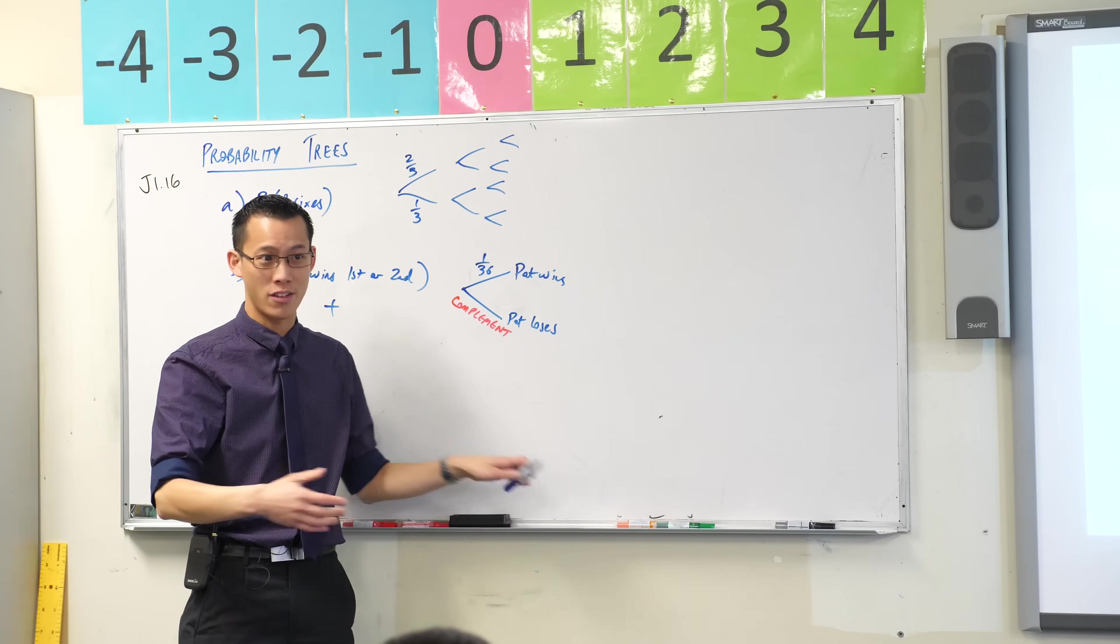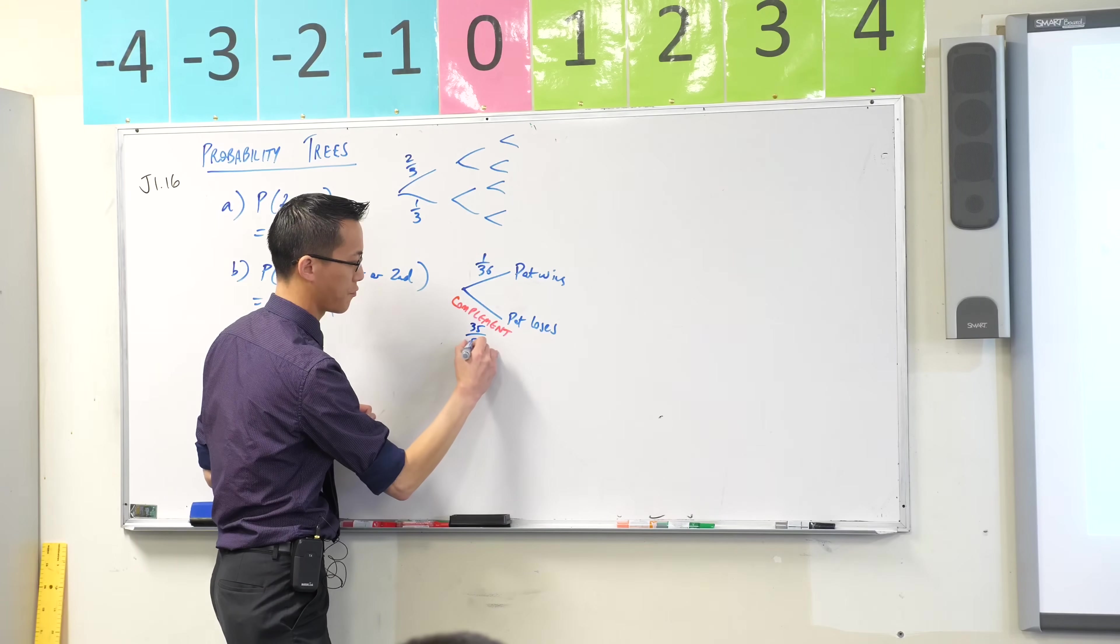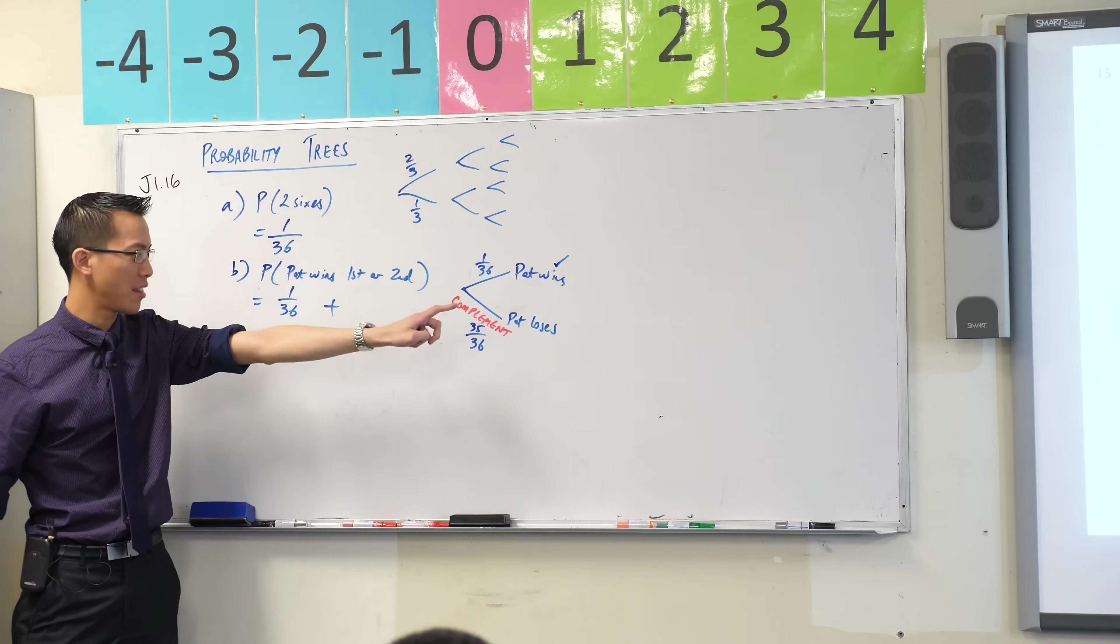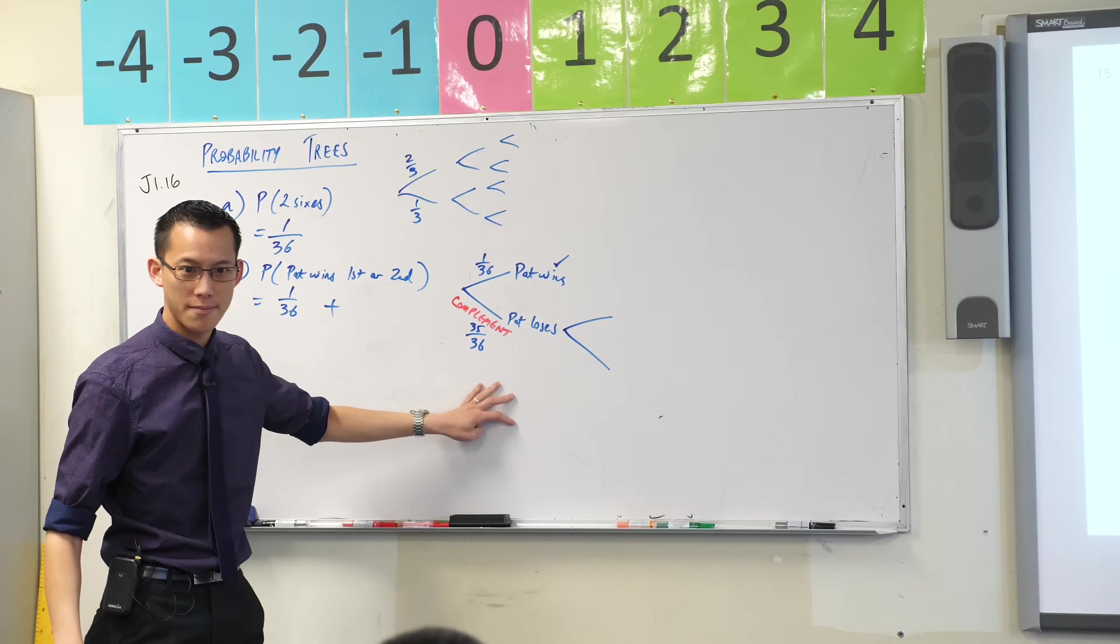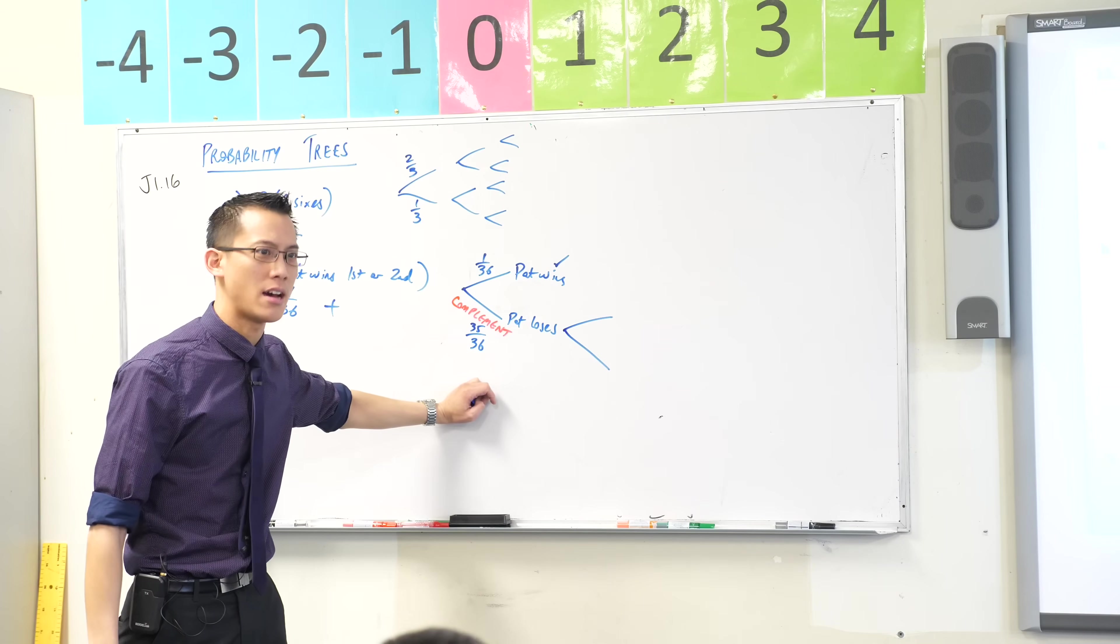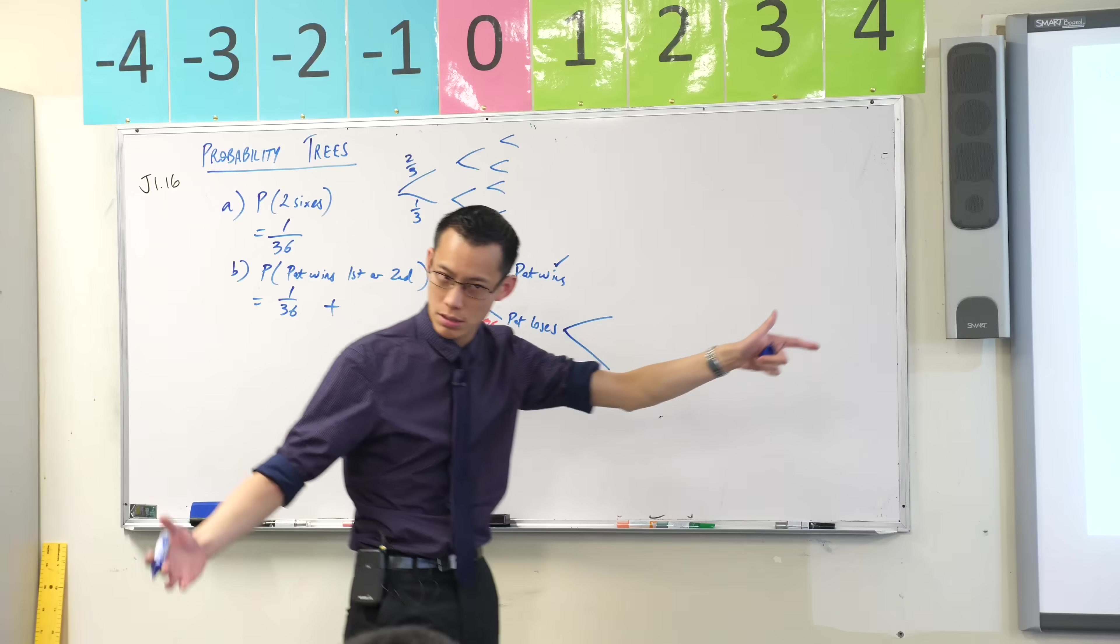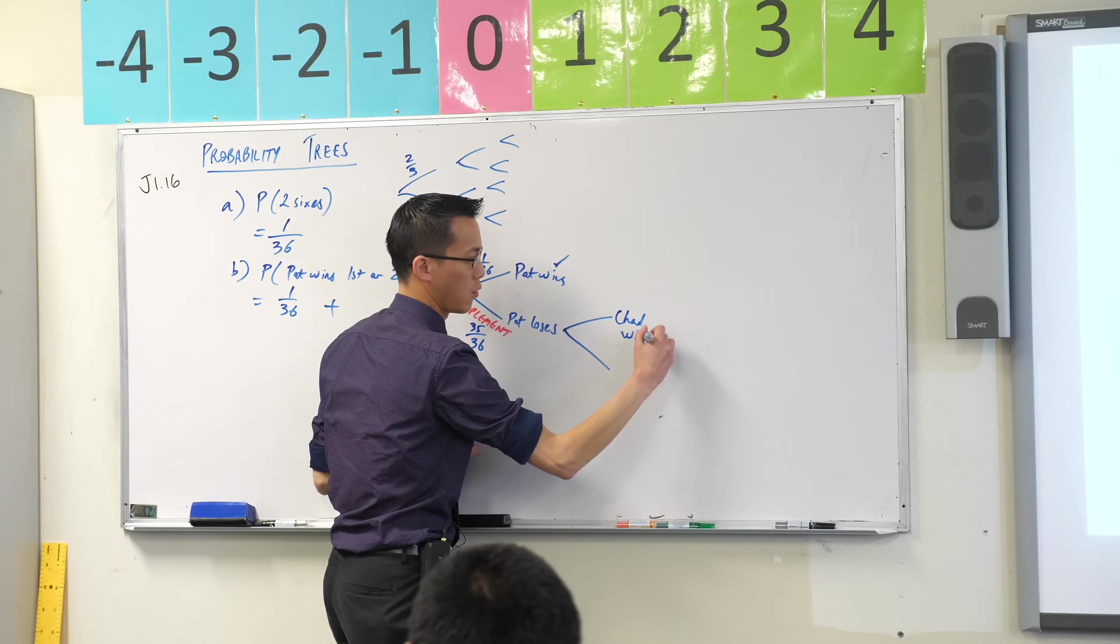We've already thought about what happens if he wins so I'm just going to take that off, it's dealt with. Now I want to get to him winning on the second throw. So first he has to lose. What's the next event that happens? Have a think. Pat just had a roll, whose turn is it now? It's Chad, because they take their turns. The next branch has nothing to do with Pat, it's Chad wins or loses.